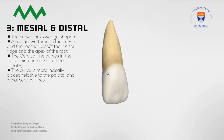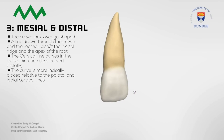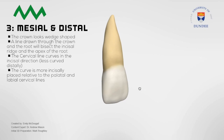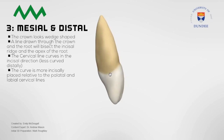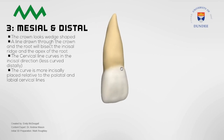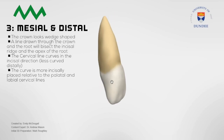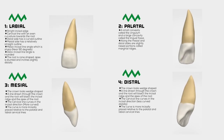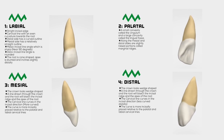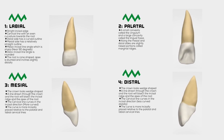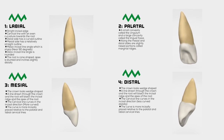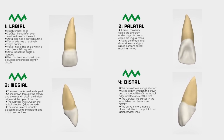This is a key point to help you distinguish between the left and the right maxillary central incisor — the curve is more incisally placed relative to the palatal and labial cervical lines. The images featured in this video were courtesy of the University of Dundee School of Dentistry. You can find the link to these 3D models in the description. Please consider subscribing to the channel for more videos like this, and thank you so much for watching.